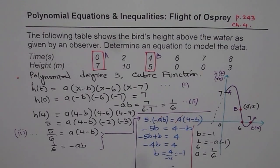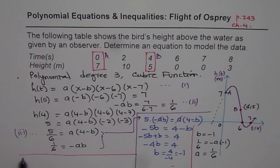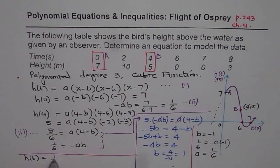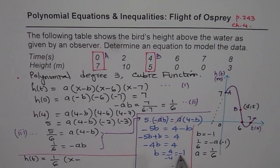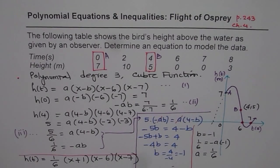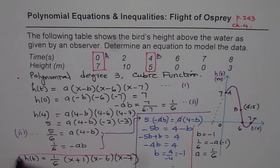So my solution is, so final answer, the polynomial is h of t equals to a is one over six, one over six times x minus b is minus one, so x plus one, times x minus six, times x minus seven. So that is the polynomial equation we are looking for.